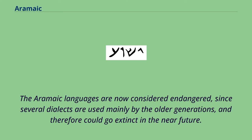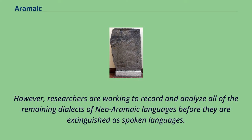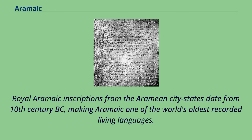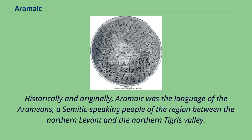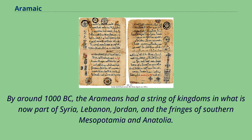Researchers are working to record and analyze all of the remaining dialects of Neo-Aramaic languages before they are extinguished as spoken languages. Royal Aramaic inscriptions from the Aramean city-states date from the 10th century BC, making Aramaic one of the world's oldest recorded living languages. Originally, Aramaic was the language of the Aramaeans, a Semitic-speaking people of the region between the northern Levant and the northern Tigris Valley. By around 1000 BC, the Aramaeans had a string of kingdoms in what is now part of Syria, Lebanon, Jordan, and the fringes of southern Mesopotamia and Anatolia.